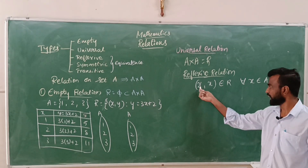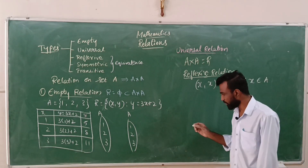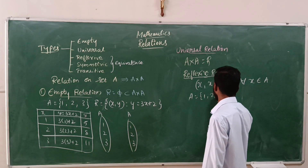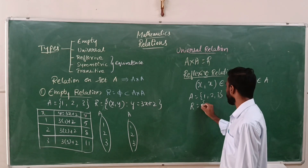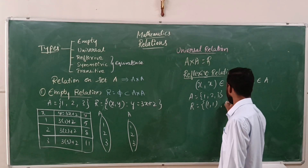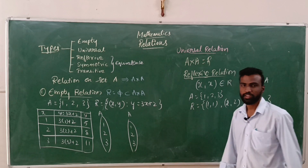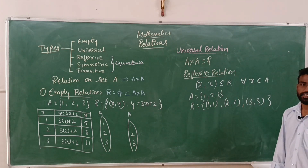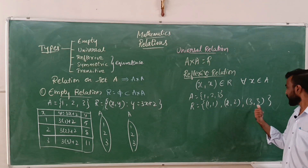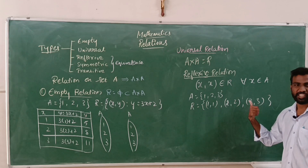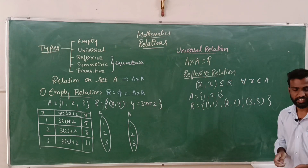The relation on set A is called reflexive only when (x, x) belongs to R for all x in A. For example, if A is equal to {1, 2, 3}, then the relation will be reflexive only when it contains (1,1), (2,2), and (3,3). The input has to be the same as the output. When that type of relation is found, it is called a reflexive relation.